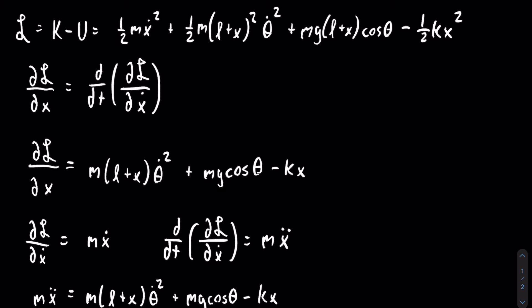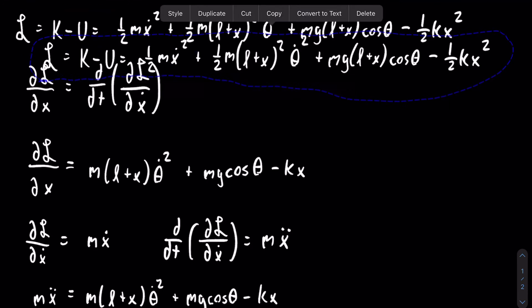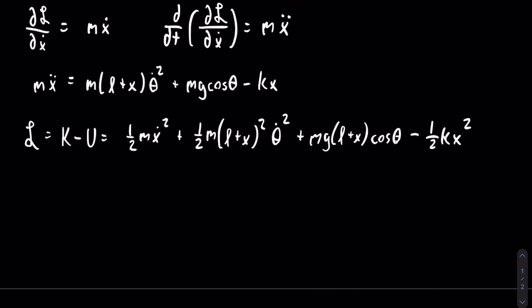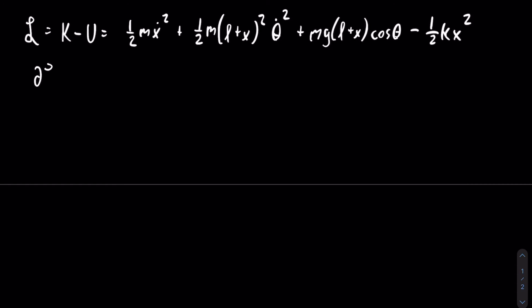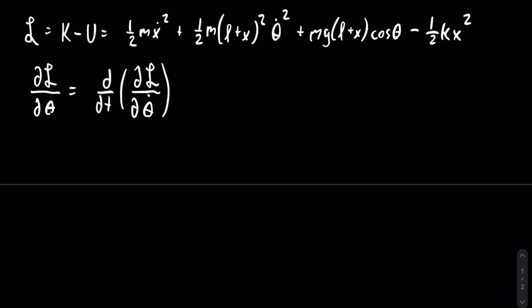We have one equation; now we need to do it again. We use the Euler-Lagrange equation again but instead of x we use theta. For the partial of the Lagrangian with respect to theta, we only need to use the third term, and we know that the derivative of cosine of theta is negative sine of theta. So the partial of the Lagrangian with respect to theta is equal to negative mg times the quantity l plus x, times sine of theta.